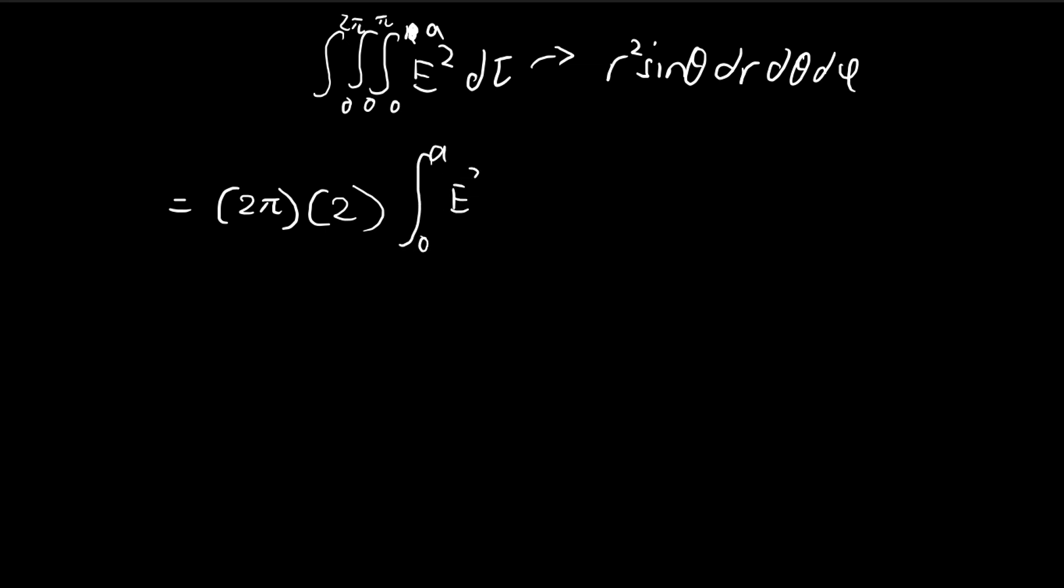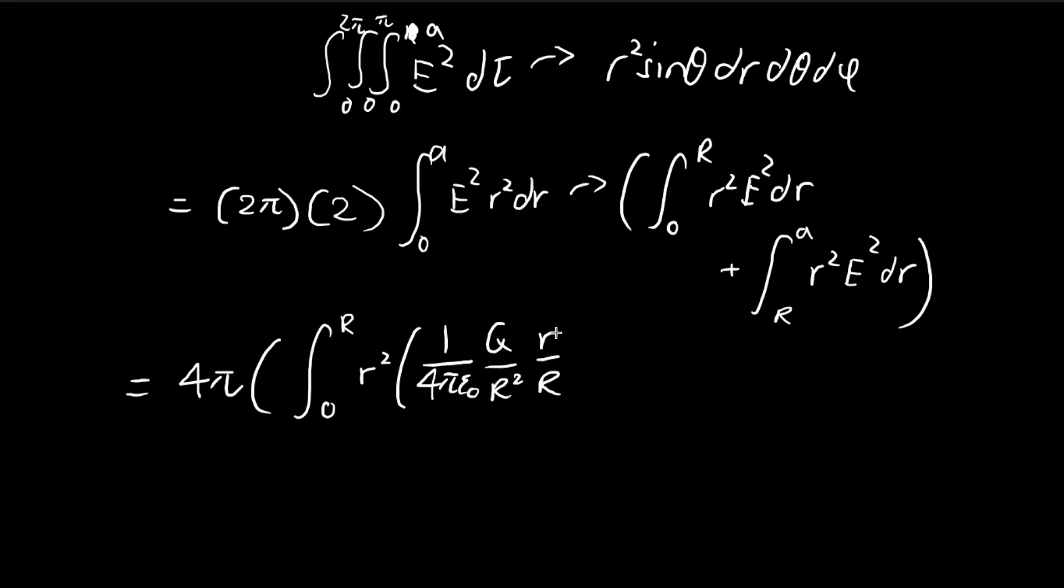So all we're going to be left with is this, r squared dr. And then we're going to have to break this up from 0 to r. And the reason why we're breaking this up is because the electric field is different when you move outside of the sphere, so when you move outside of A. So from 0 to r, once you're inside of the sphere, the electric field is equal to something like this. And then once you're outside of the sphere, this one is simpler because you can just treat it like a point charge. That's the beauty of electrodynamics.